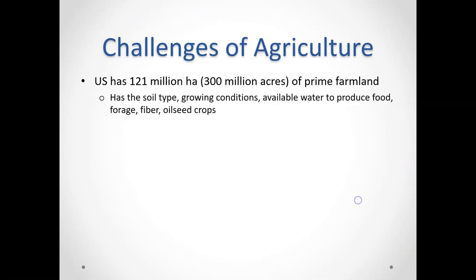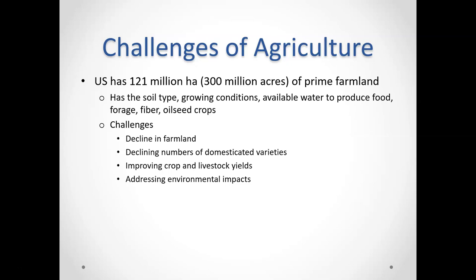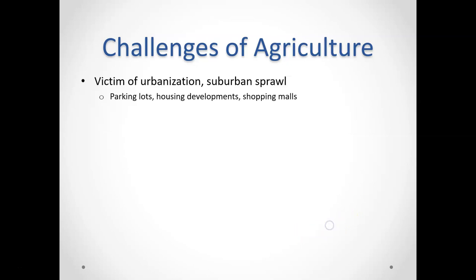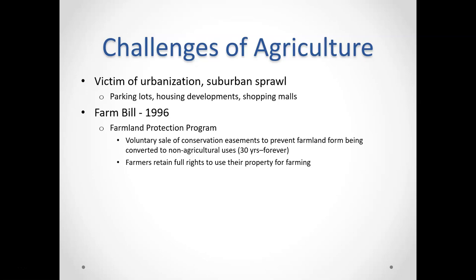Agriculture has lots of challenges. One of the first is that in almost all places, the amount of productive farmland we have is decreasing. We're taking farmland and turning it into other things — homes, businesses, shopping centers, playgrounds. That's called development. As we develop land, what tends to be available tends to be land we previously used to farm on. Farms are definitely victims of urbanization and suburban sprawl. As human developments move outward, we continue to lose more and more farmland.